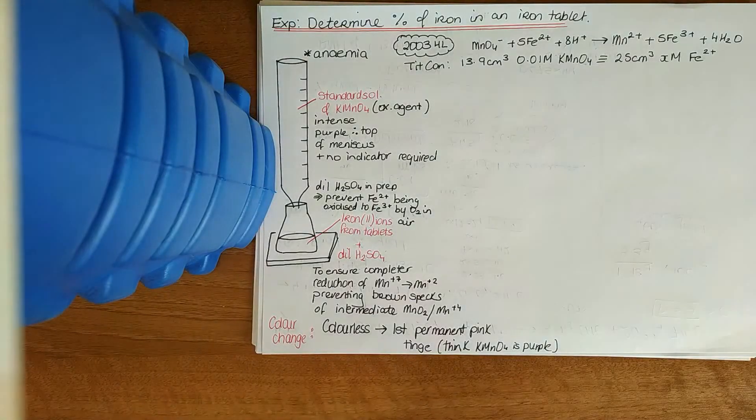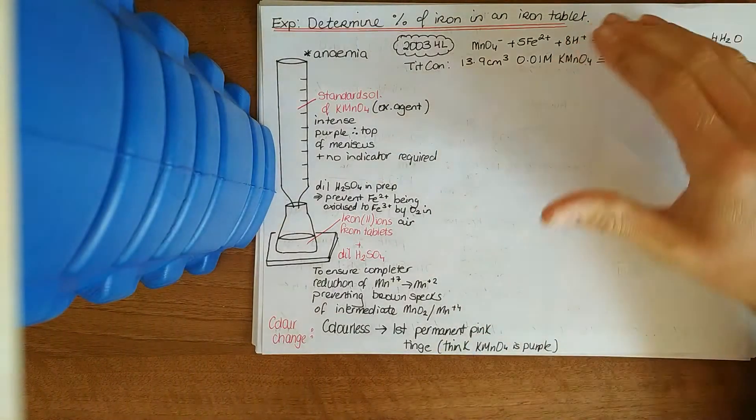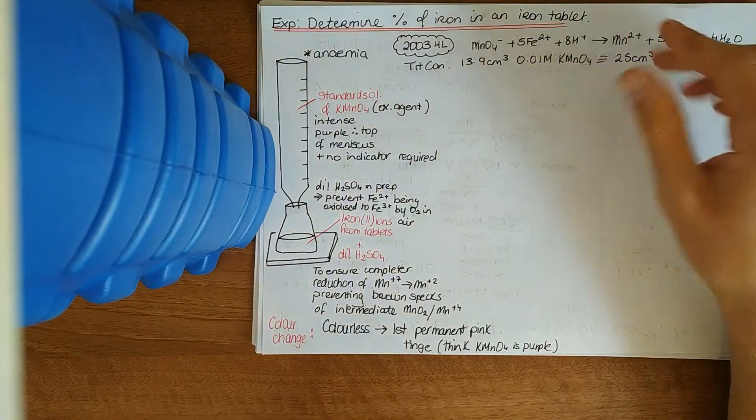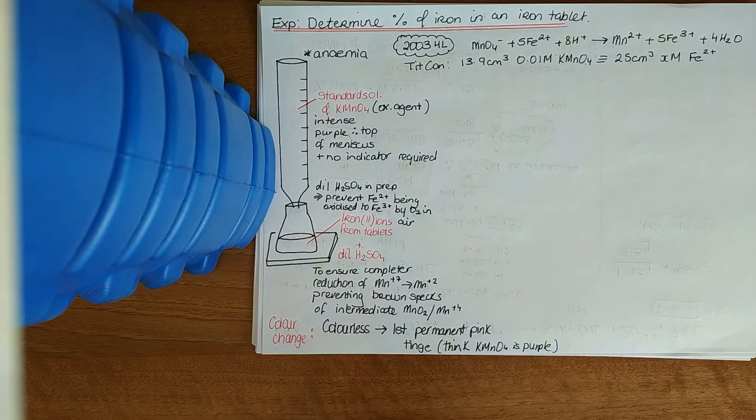We'll look now at another redox titration. This goes into the category of ammonium iron 2 sulfate and potassium permanganate titrations, potassium manganate 7 titrations.